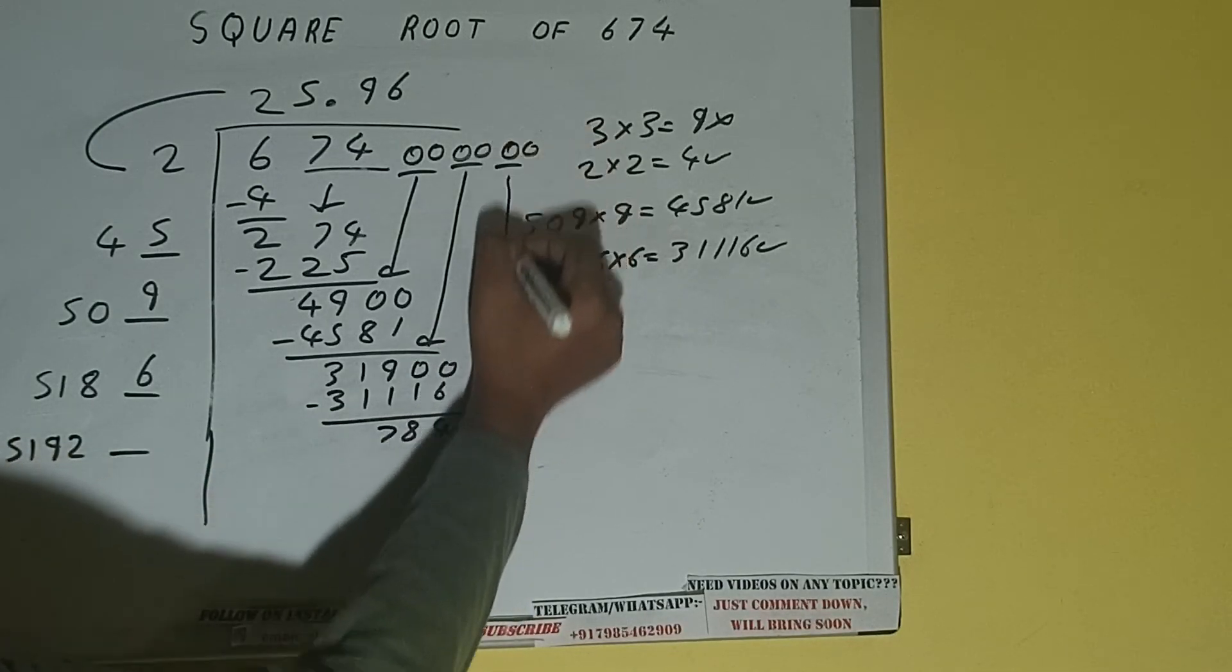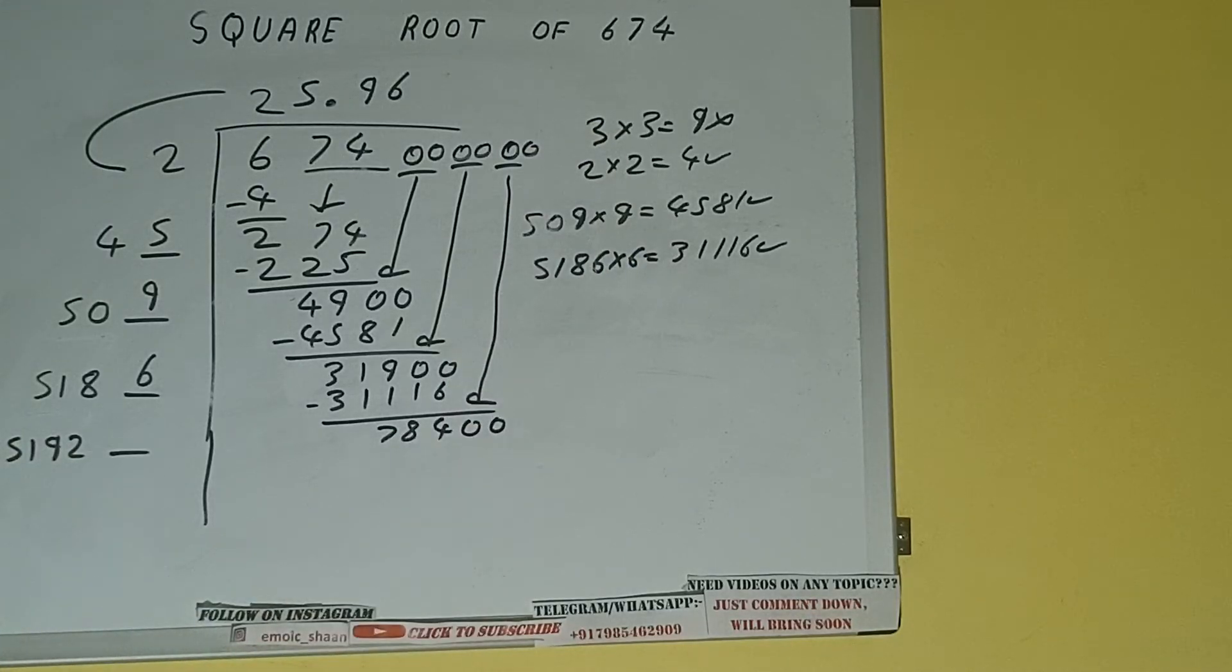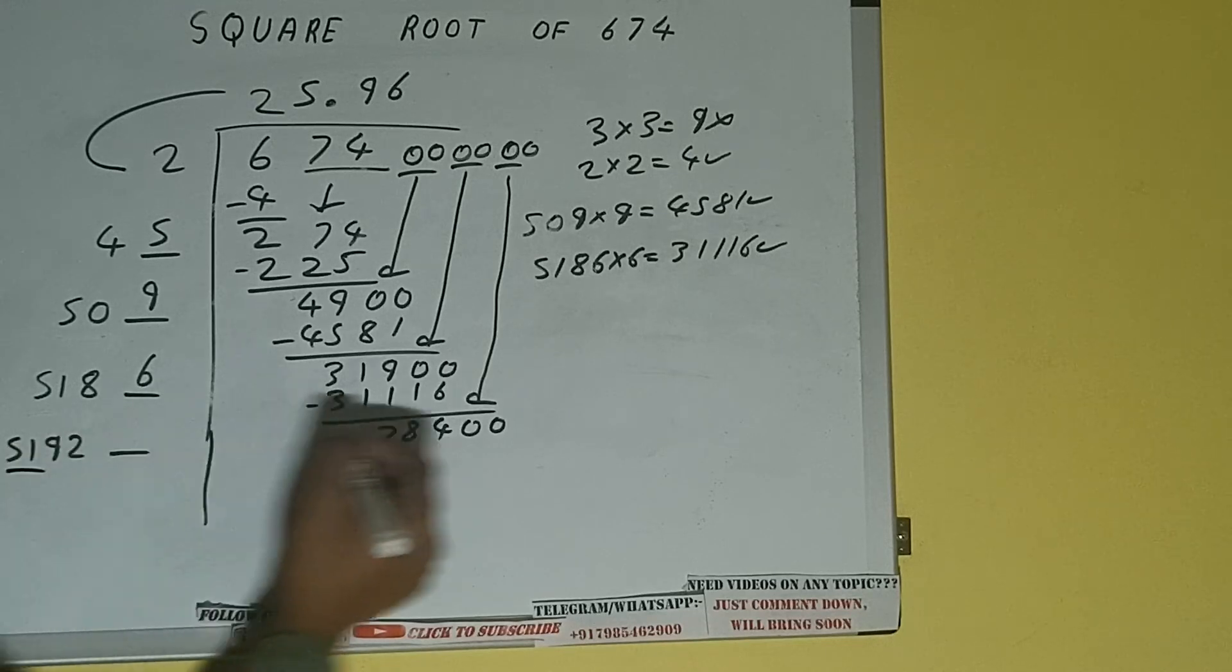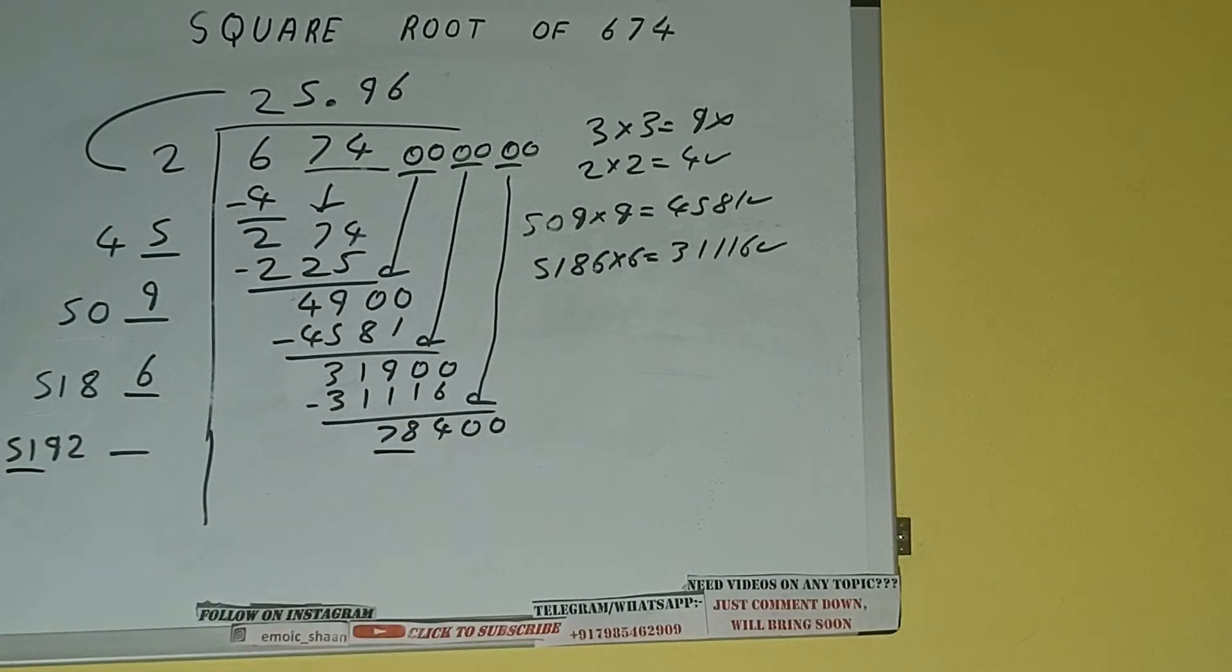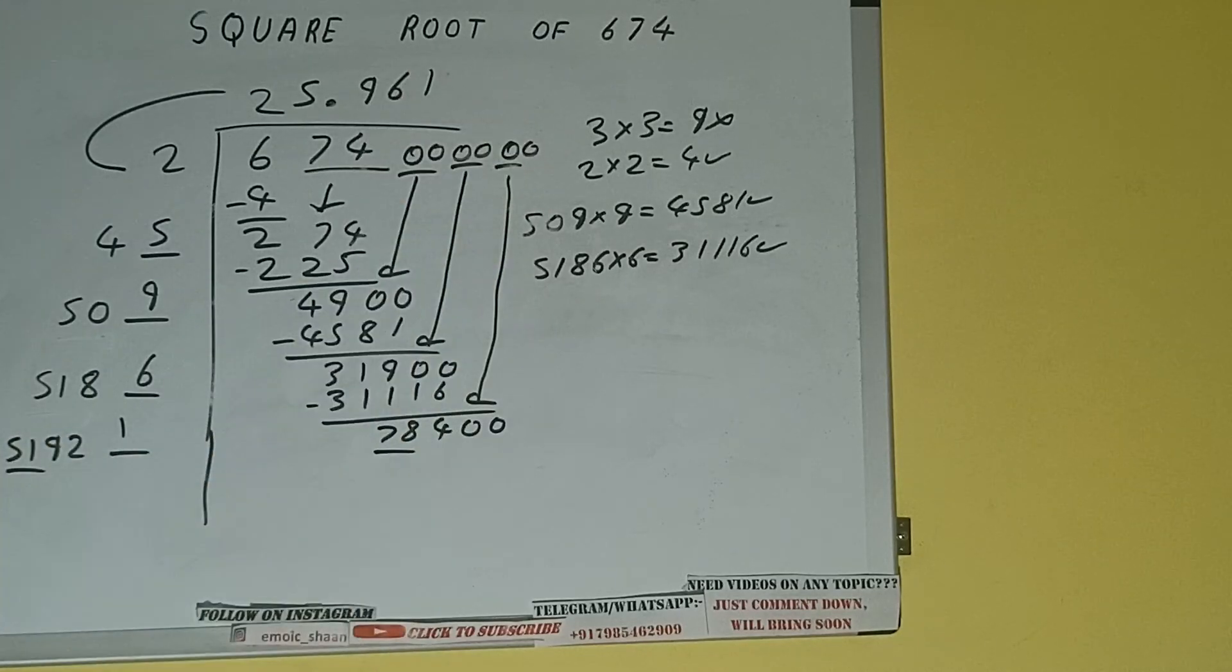calculate because we got the answer correct up to three decimal places. So square root of 674 will be 25.961.